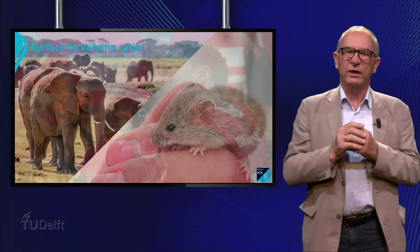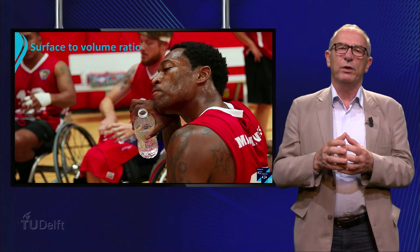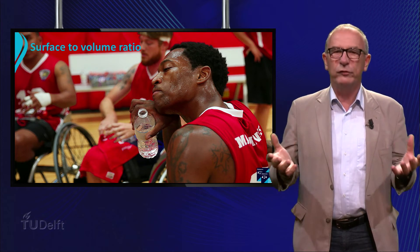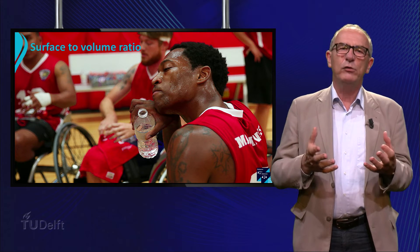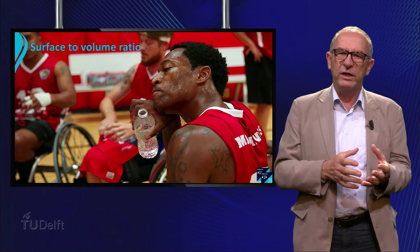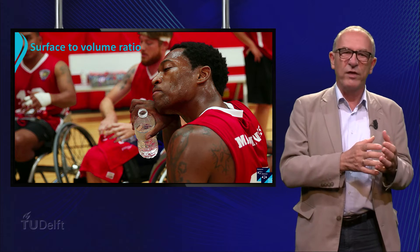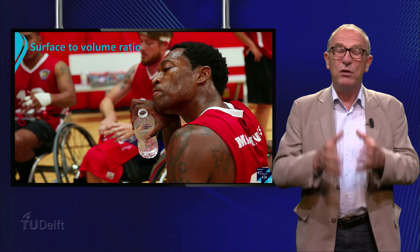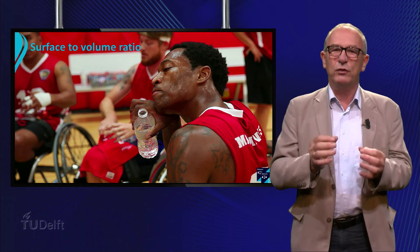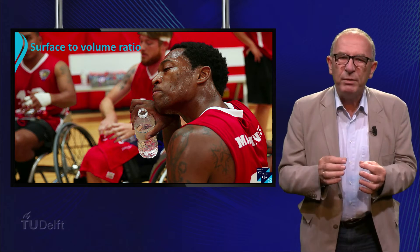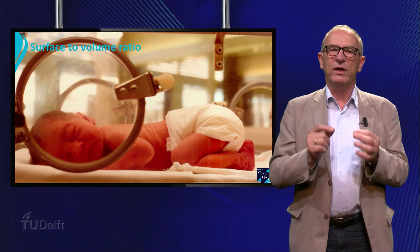Consider your own body. We produce heat in our body and lose it through our skin. Roughly, the ratio of the surface area of the skin to the volume of our body is the parameter which determines the speed of cooling. A baby, where the ratio is high, cools faster than an adult. That is one of the reasons that a baby born too early has to stay in an incubator to keep their body temperature at 37 degrees Celsius.